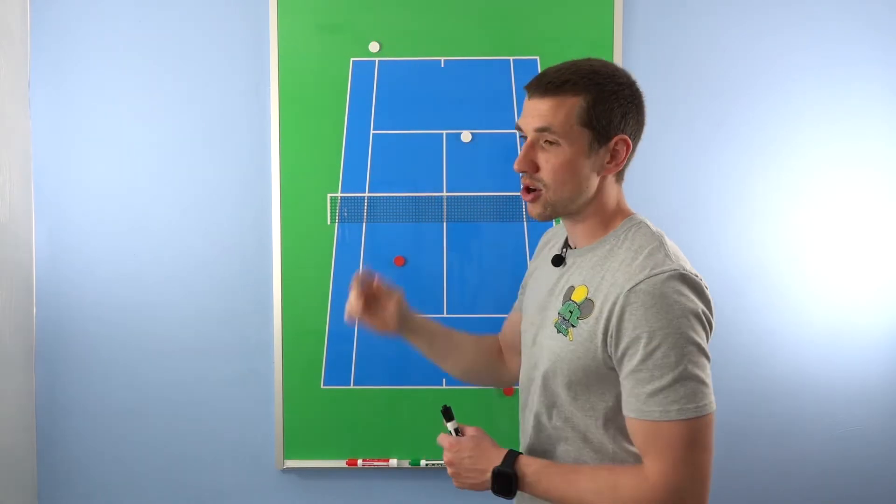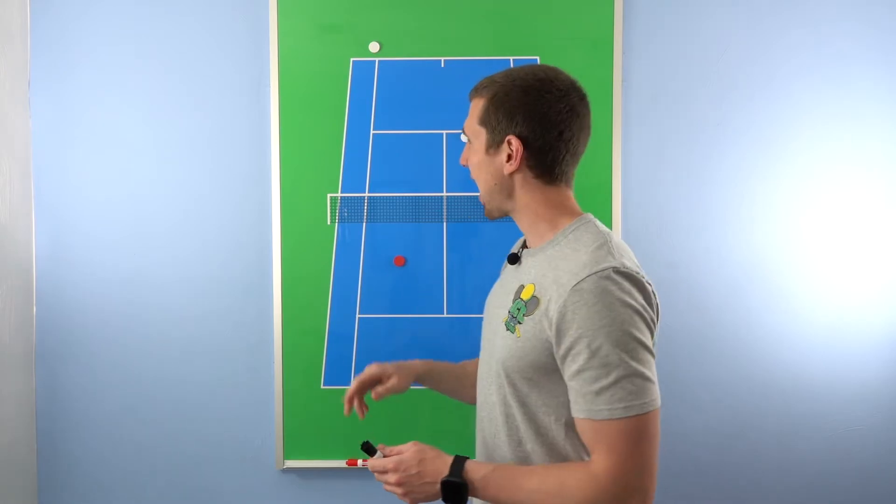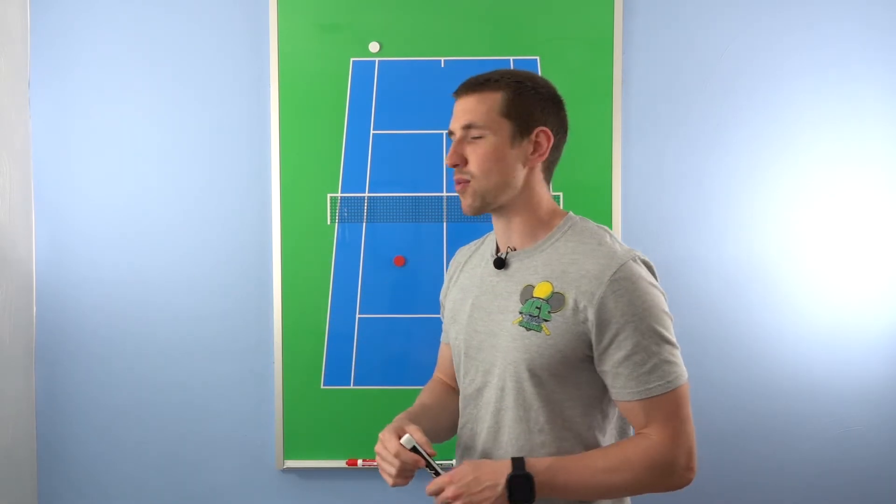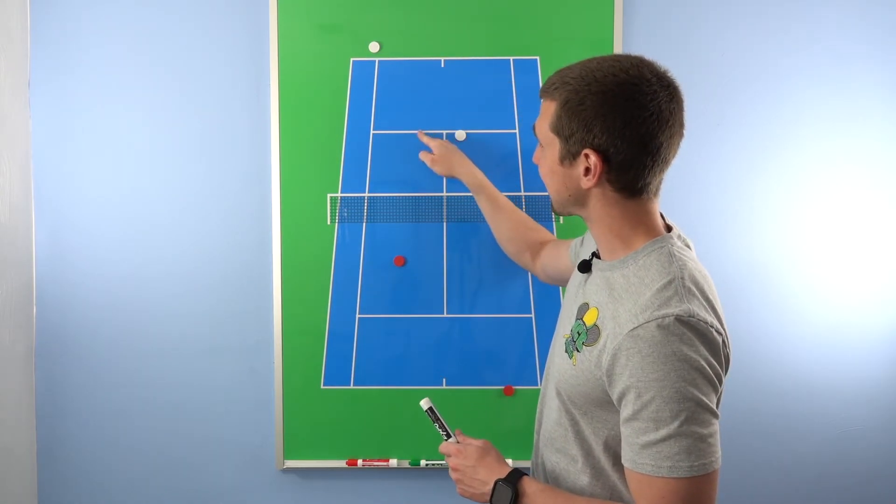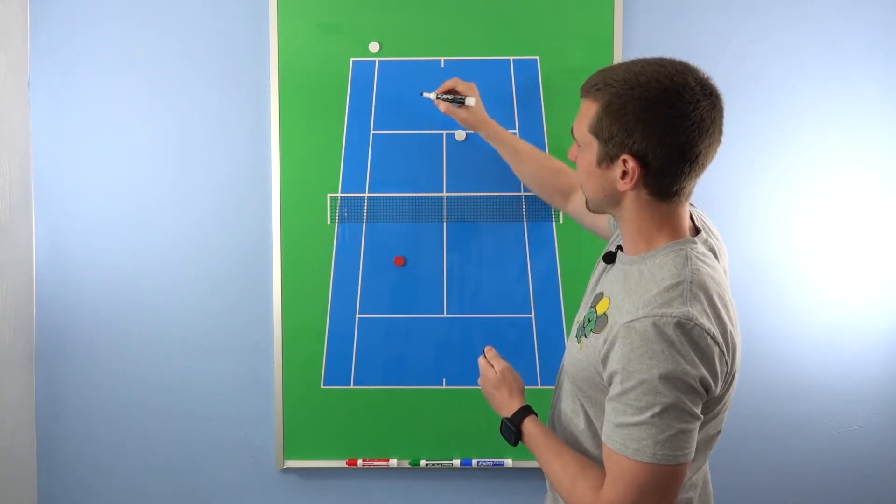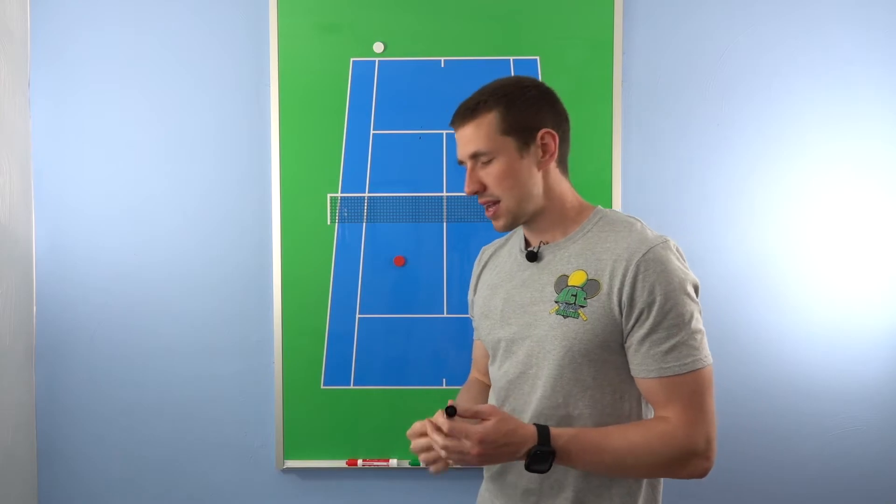Now, the returning team, the returner really has the main priority to actually do what? To make the return. A simple way of thinking about this is if you can't start a point, you can't win a point. If you can't start it, you can't win it. You need to call the line because you can see it from this angle. You're looking at it, you're easily able to tell whether that ball is in or out. Your partner, on the other hand, can't really estimate the depth as well. So, it's harder for your partner to call the serve. Plus, they should be focusing on the returner. So, you should really help your partner by calling the line.